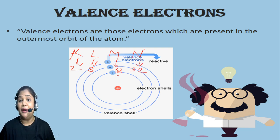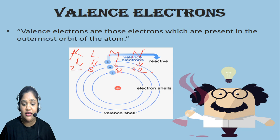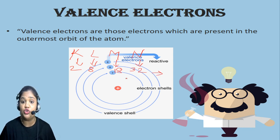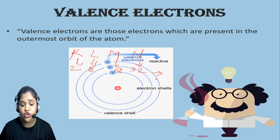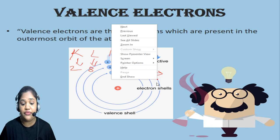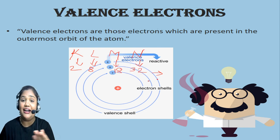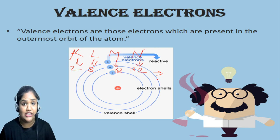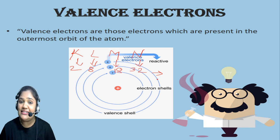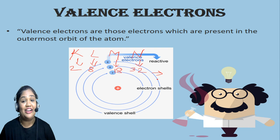Here in this particular diagram, you can see this shell which is the outermost shell — that is known as the valence shell, and electrons which are present in that particular shell are known as valence electrons. So electrons which are present in the outermost orbit of an element are known as valence electrons.